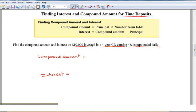So let's look at this example. Find the compound amount and interest on $10,000, so that's the principal, $10,000 invested in a four-year CD earning 4% compounded daily.